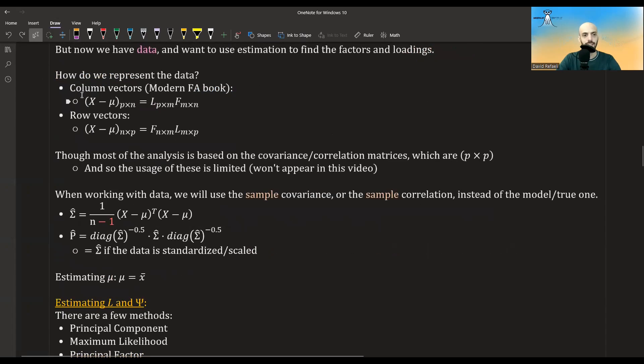How do we represent the data? Well, we can look at each observation as a column. This is what is done in the modern factor analysis book, and then the equations would look like this.